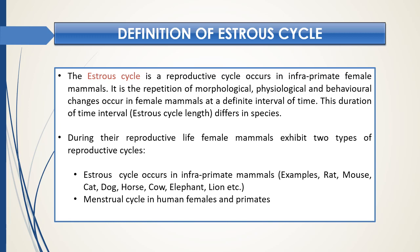The estrus cycle is a reproductive cycle that occurs in lower categories of female mammals. It is the repetition of morphological, physiological, and behavioral changes that occur in female mammals at a definite interval of time. This duration of the time interval differs between species.